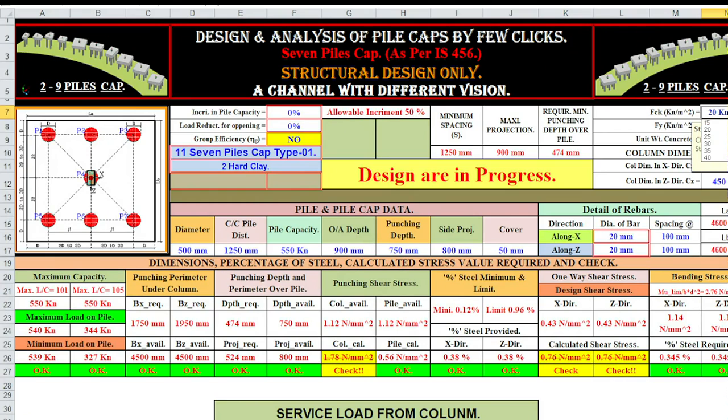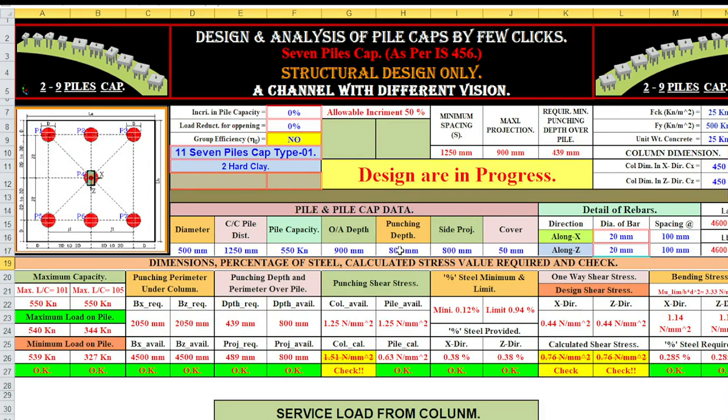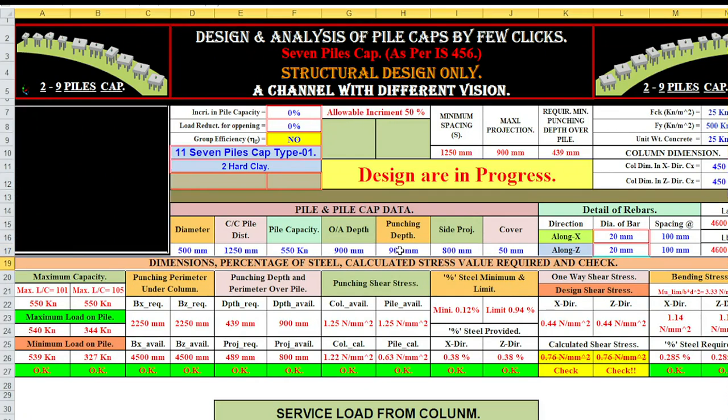Say FCK M25, Fy 500. Column dimension we can change 400, sorry 450 by 450. Look here, maximum capacity of pile 550, maximum design load on each pile 540. So okay. We have problem only on punching stress. So we are increasing punching depth 800. Not okay. 900. It is okay.